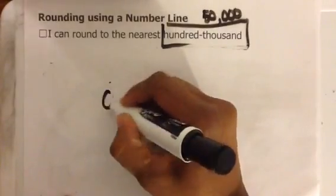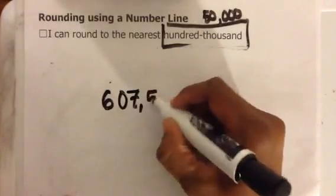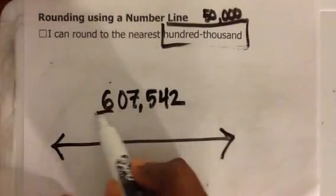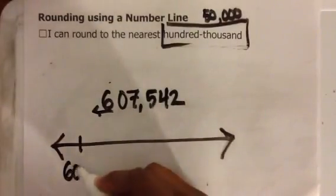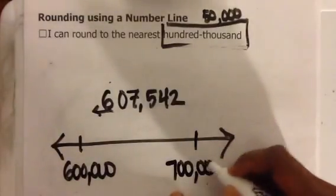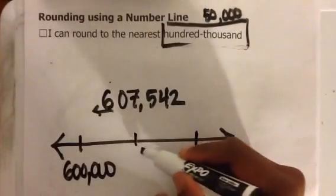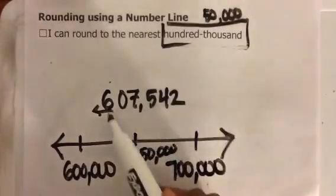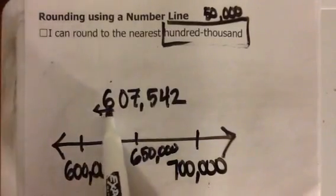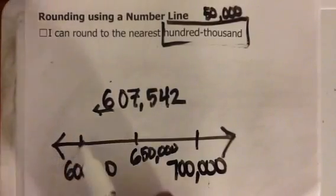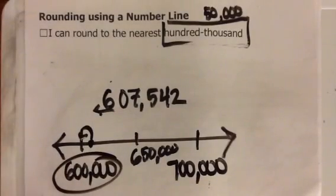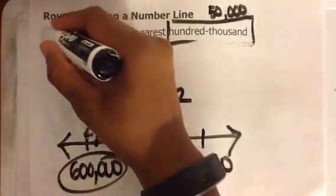Let's do six hundred seven thousand five hundred forty-two. Ones, tens, hundreds, thousands, ten thousands, hundred thousands. Everything to the right becomes a zero. Six hundred thousand plus one hundred thousand is seven hundred thousand. Halfway between is fifty thousand. Everything to the left gets left: six hundred thousand, six hundred fifty thousand, seven hundred thousand. Let's plot six hundred seven thousand five hundred forty-two on this number line — about right here. Six hundred seven thousand five hundred forty-two to the nearest hundred thousand is six hundred thousand. I can round to the nearest hundred thousand.